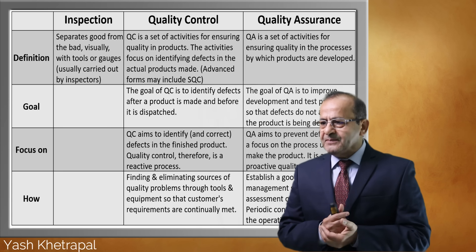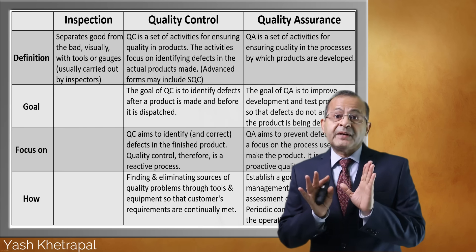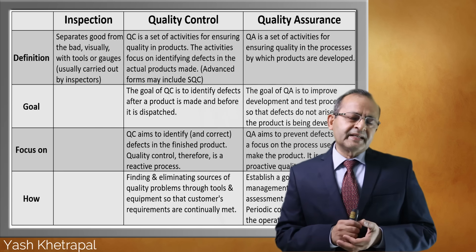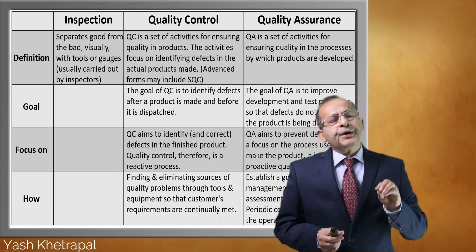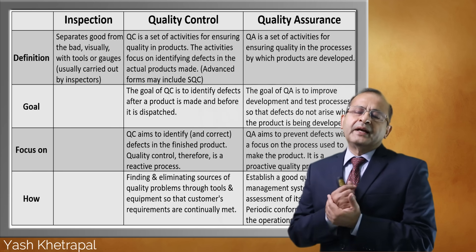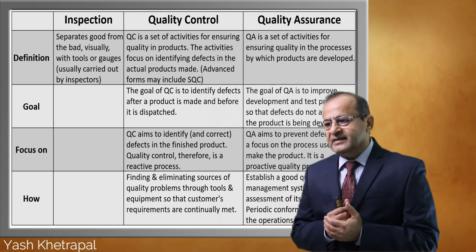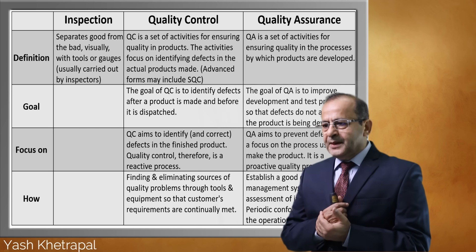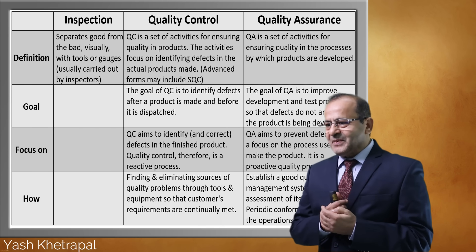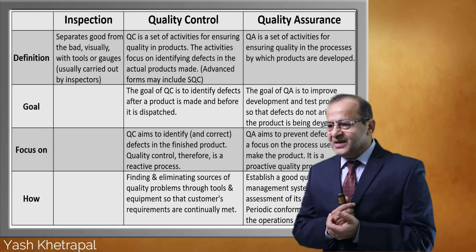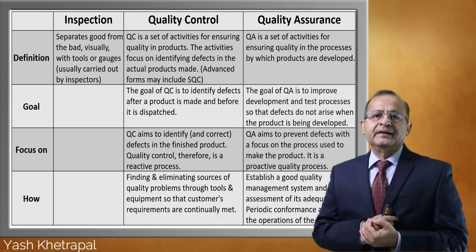The goal of QA is to improve development and test processes so that defects do not arise at all — defects do not exist when the product is being developed and manufactured. QC focuses on identifying and correcting defects in the products — therefore it is a reactive approach. QA, quality assurance, aims to prevent defects with a focus on the process used to make the product. It is a proactive approach.